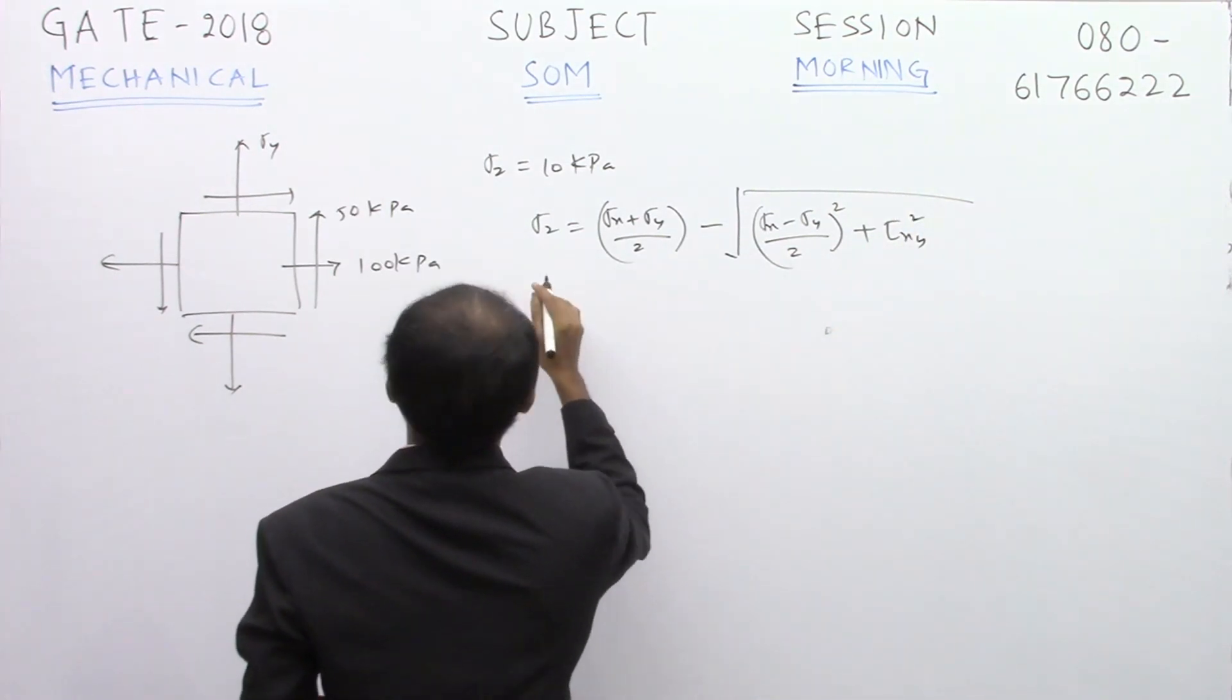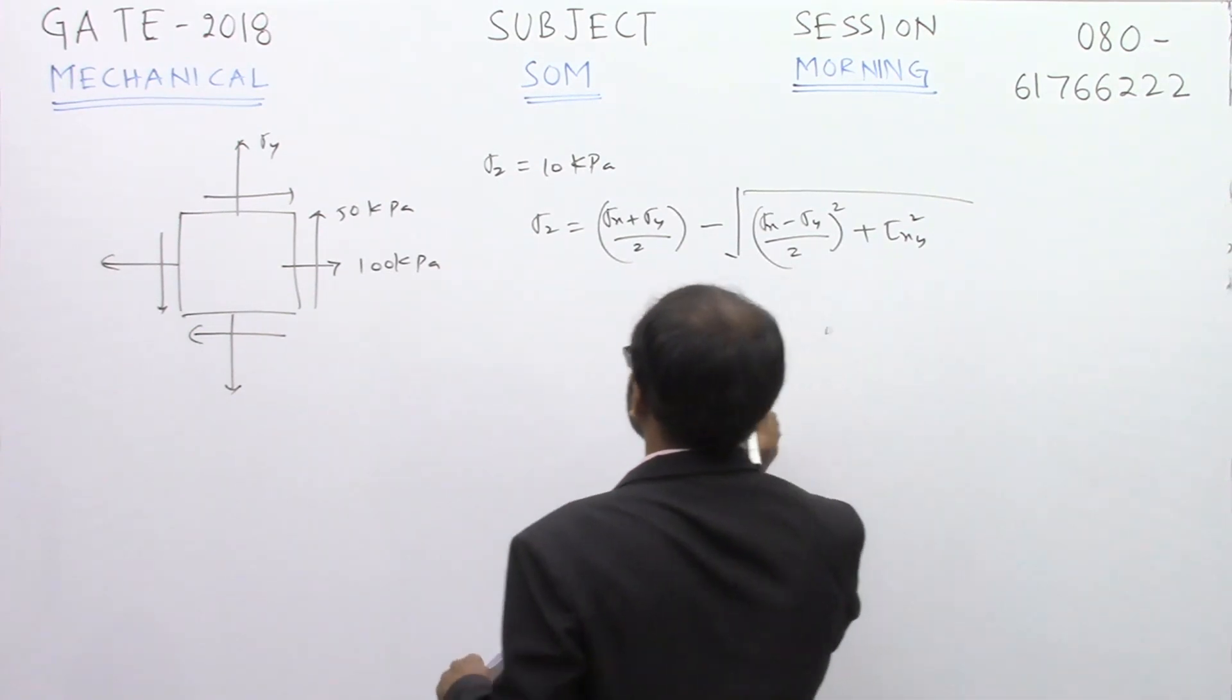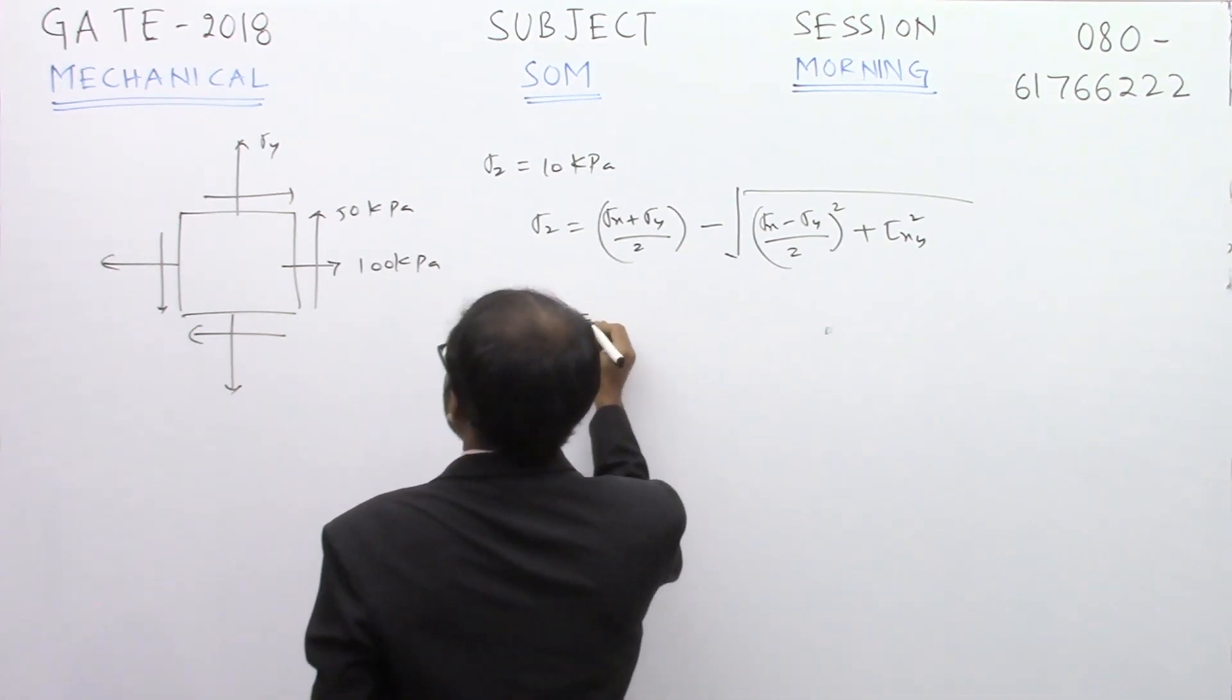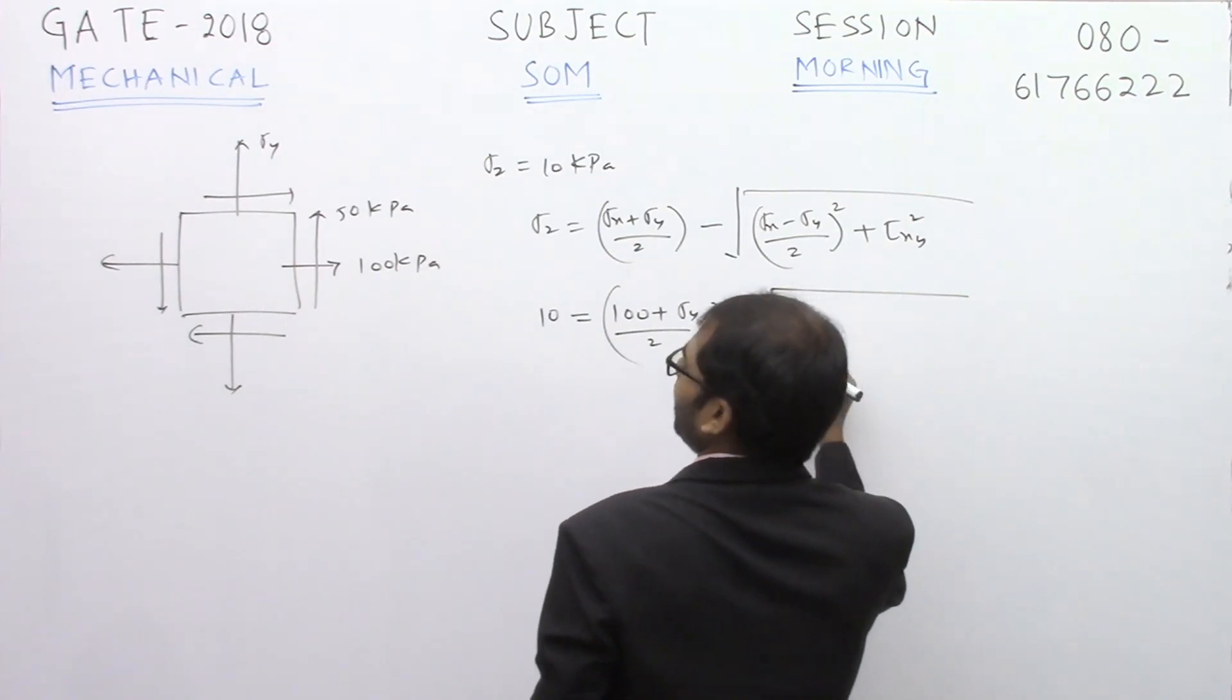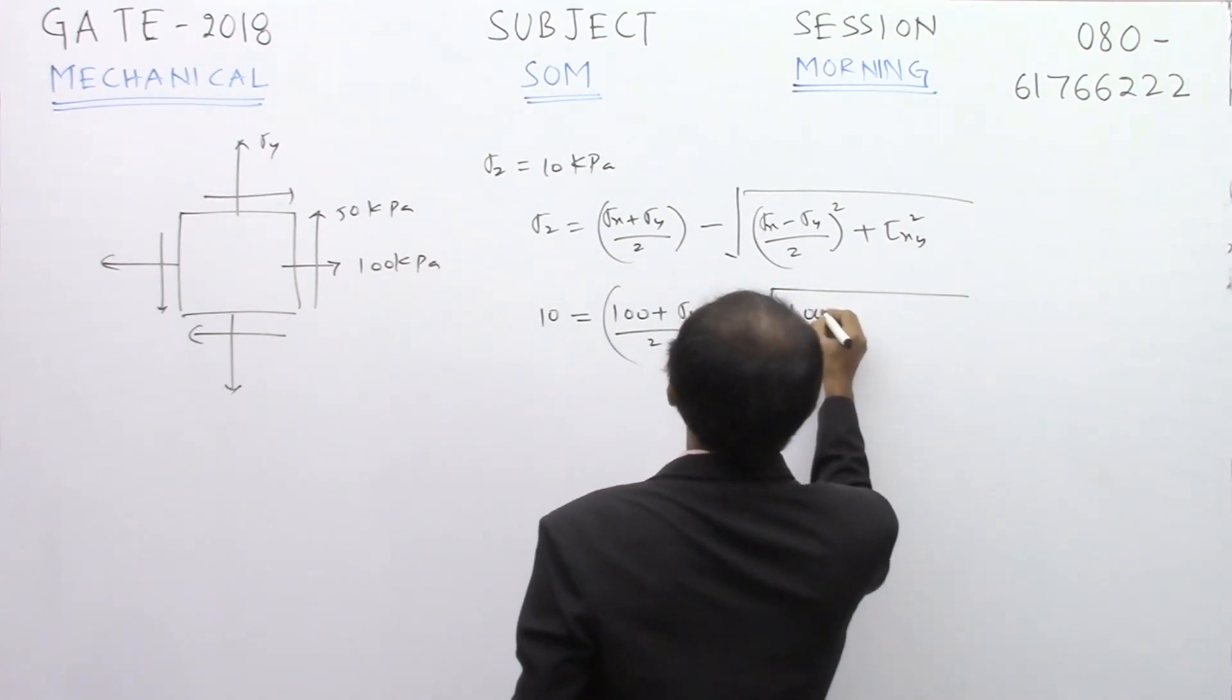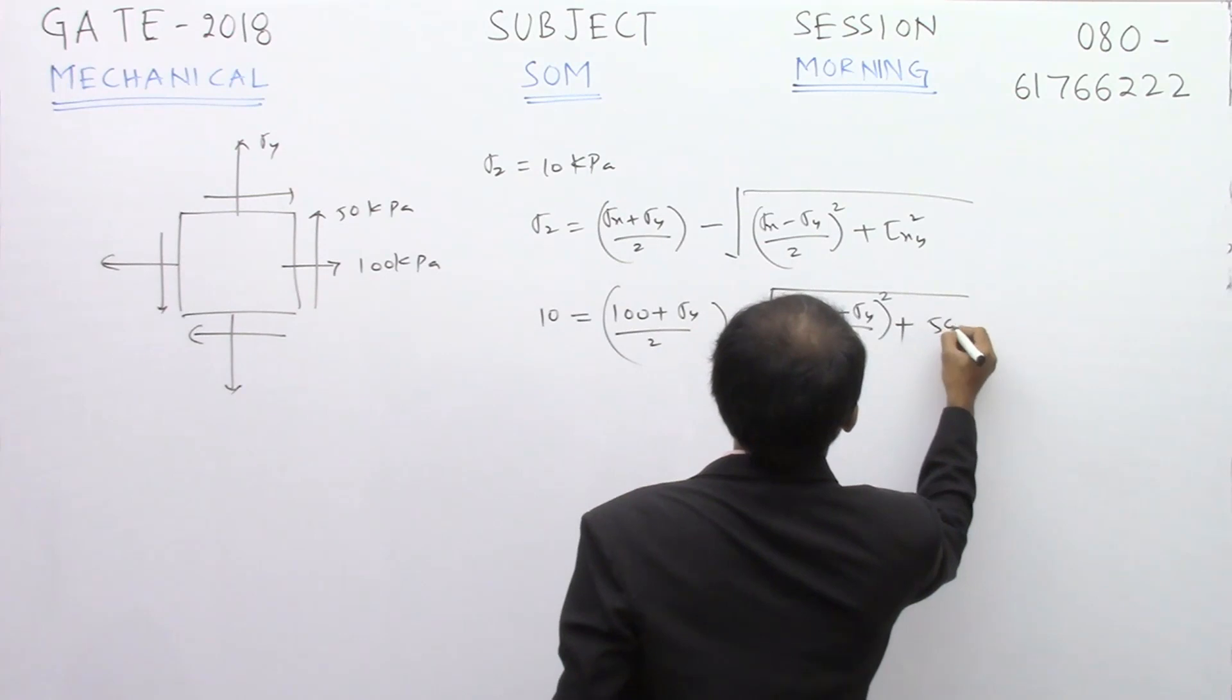Simply put the values. We are required to get sigma y in terms of kilopascal. We substitute everything in terms of kilopascal only. 10 is equal to sigma x is 100, sigma y is we do not know this value here, minus square root of 100 minus sigma y by 2 whole square plus tau xy, that is 50 square.